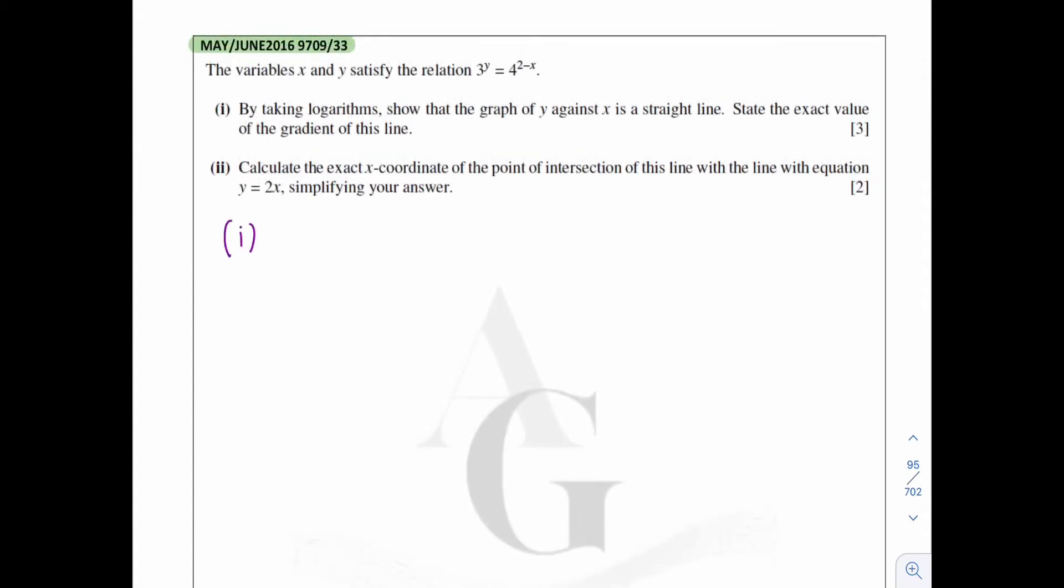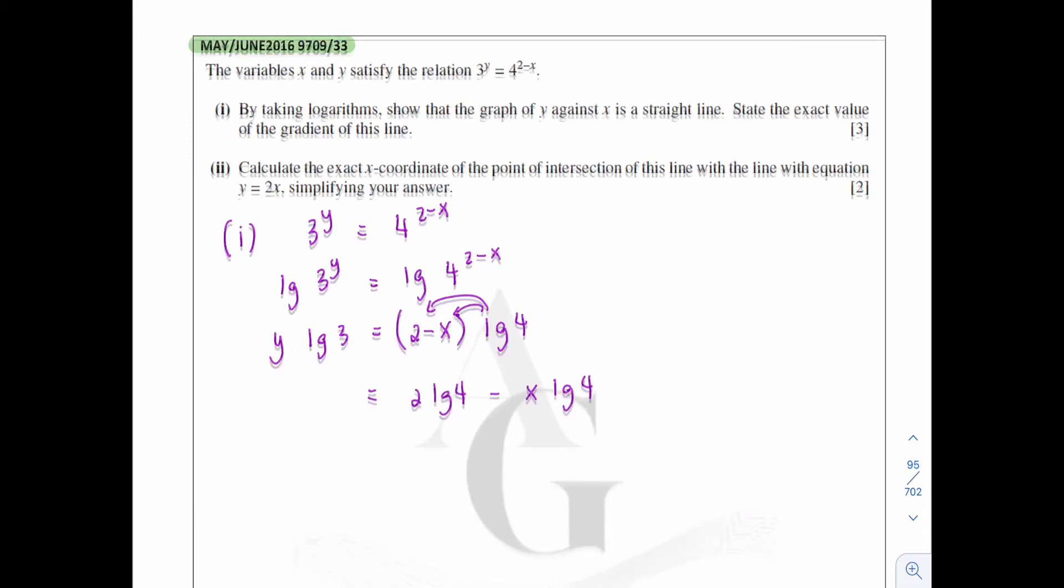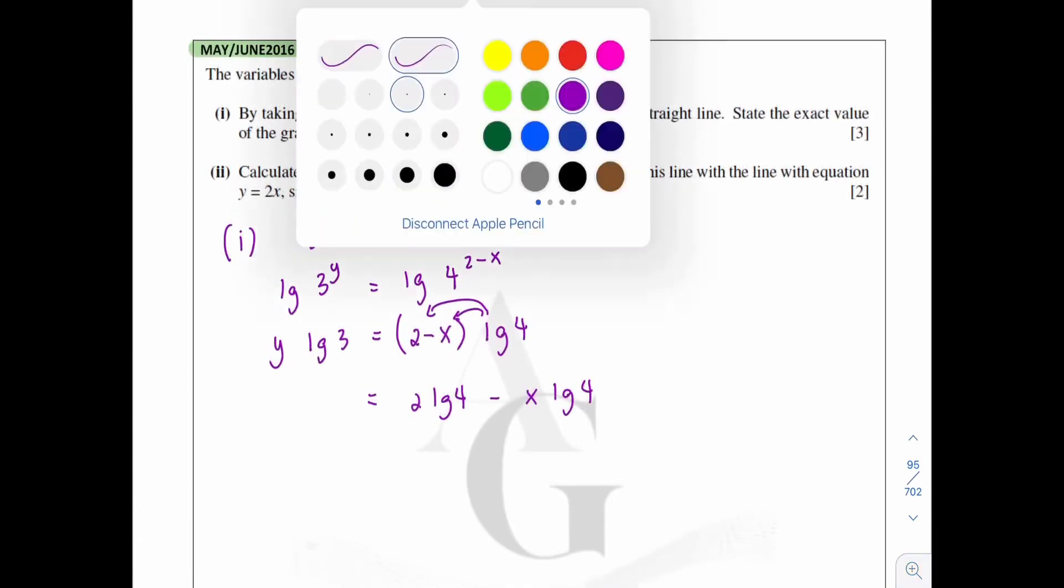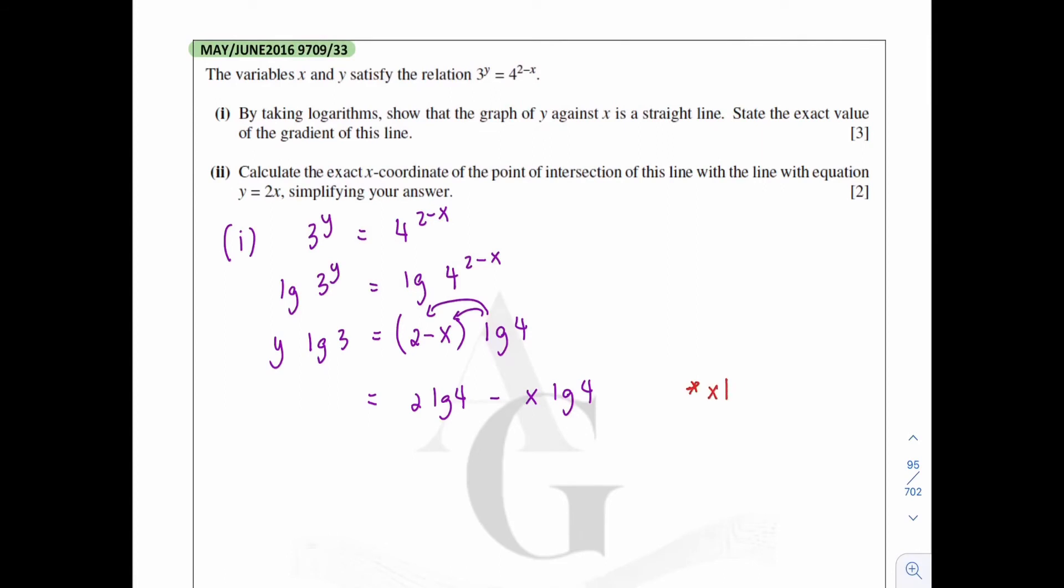As mentioned in the question, we should now log both sides. But before that, let me jot down the question. And then I'll just add log to both sides. For the power y here, we should just bring down here. It becomes y log 3. Same goes to the power of 2 minus x. It becomes 2 minus x multiplied with log 4. And then for the log 4, it should be multiplied into the bracket here. It becomes 2 log 4 minus x log 4. And there's one thing to take note here.